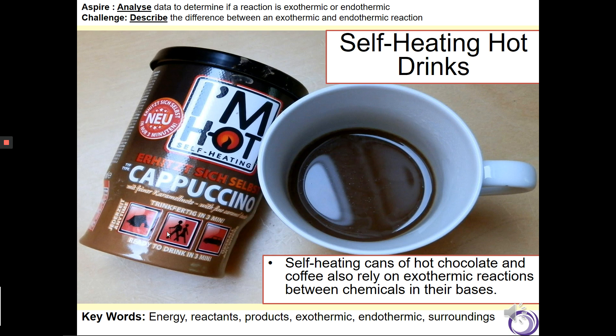Something that you might not have come across before is a self-heating drinks can. Examiners love this, and if you don't believe me that they actually did exist, then click on the YouTube clip at the top of the Google form. These cans usually had two sections in the bottom where two chemicals, often calcium oxide and water, were stored. In the top part of the can would be your coffee. When you press the button on the bottom of the can, the chemicals would be mixed together. These chemicals undergo an exothermic reaction and the heat energy released is used to heat up the coffee in the upper section of the can. They were perfectly safe and the coffee and the chemicals never mixed.